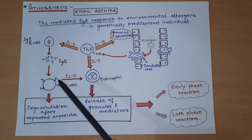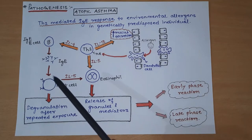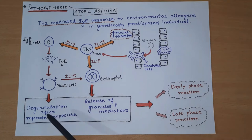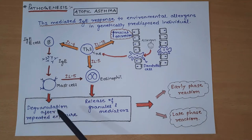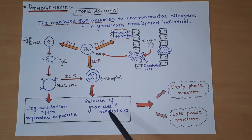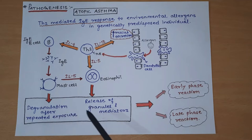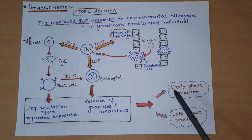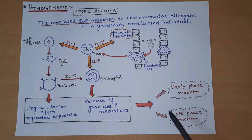When the mast cell is stimulated and there is repeated stimulation, finally degranulation of the mast cell occurs after repeated exposure. From eosinophils as well, granules and mediators are released. Due to this degranulation - the release of granules and mediators - two types of reactions are seen: first is the early phase reaction and the next is the late phase reaction.